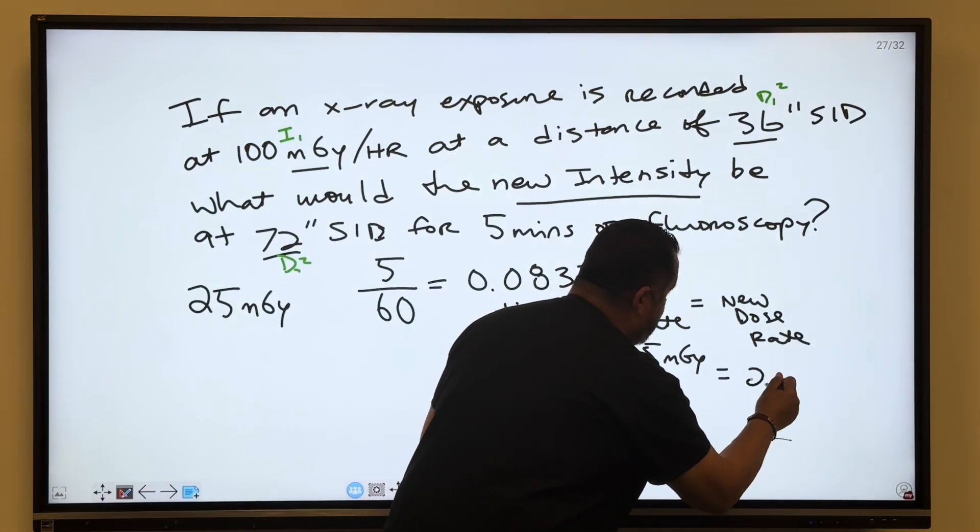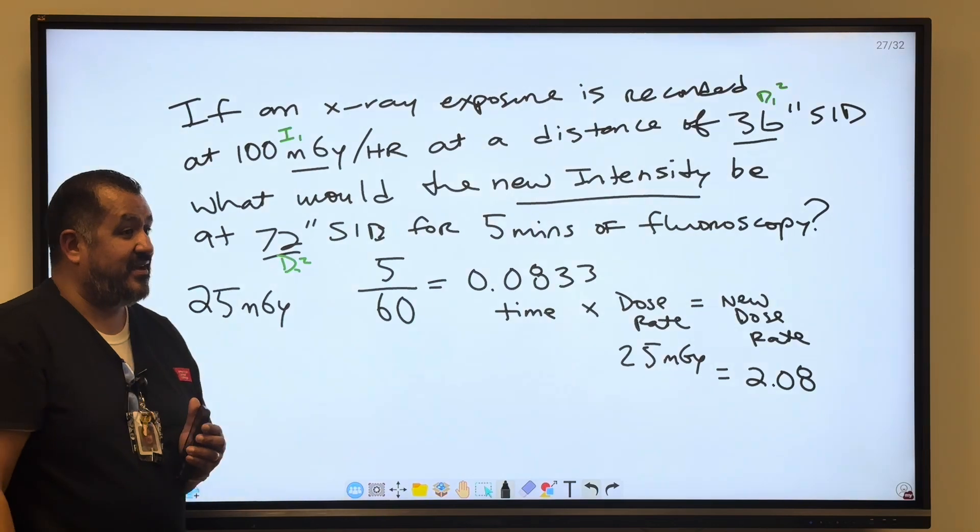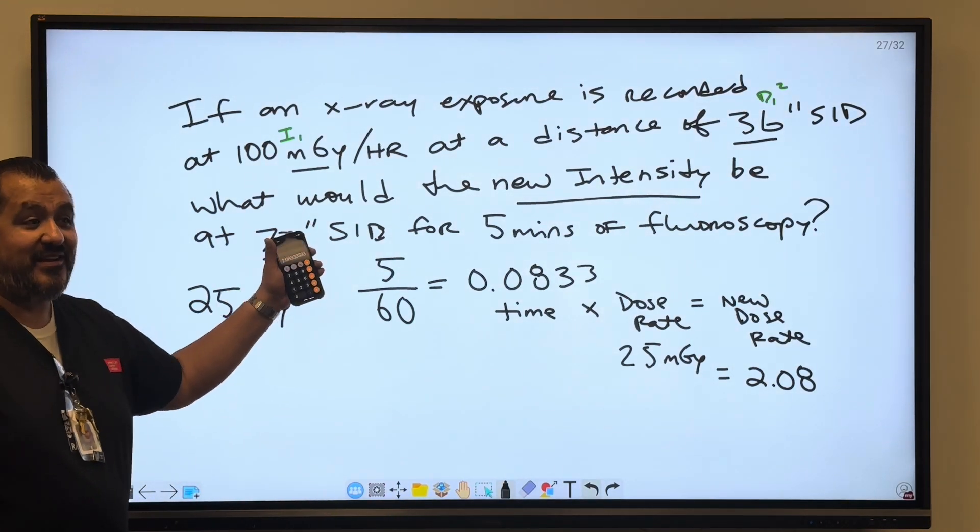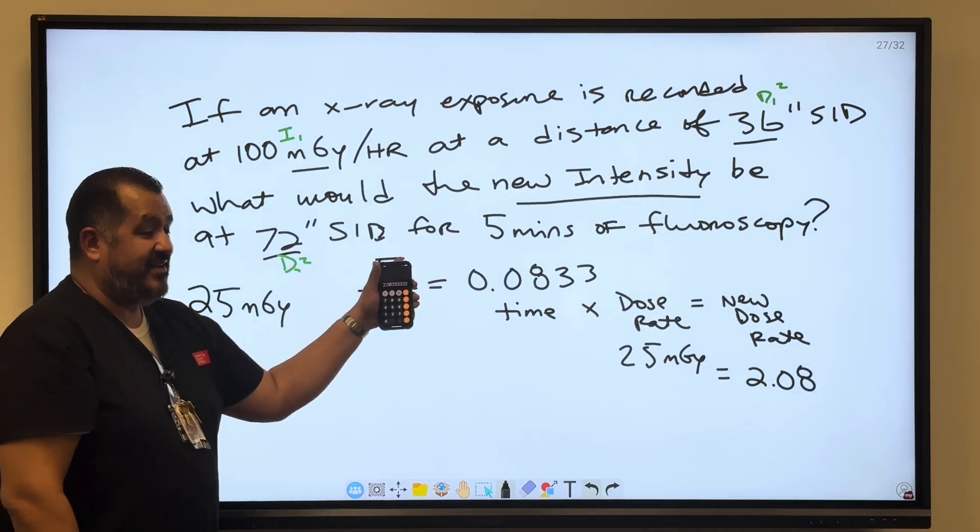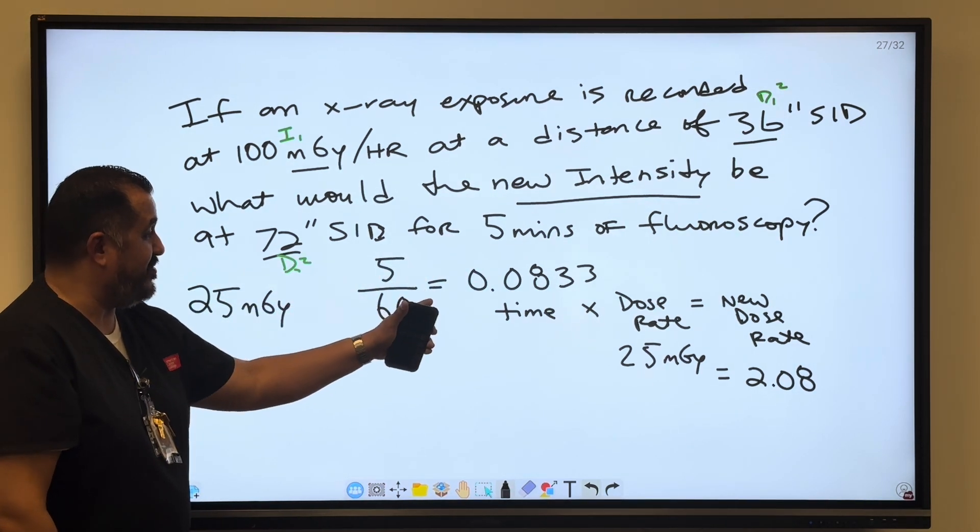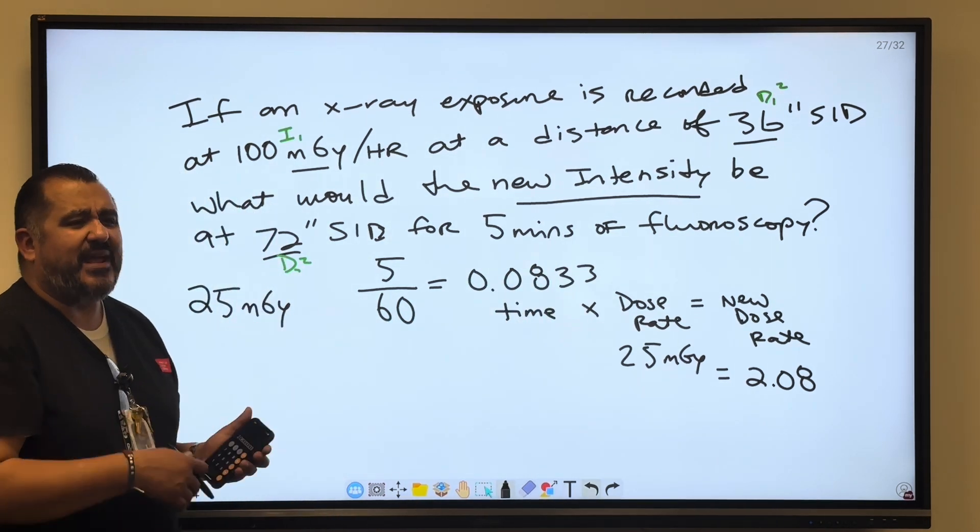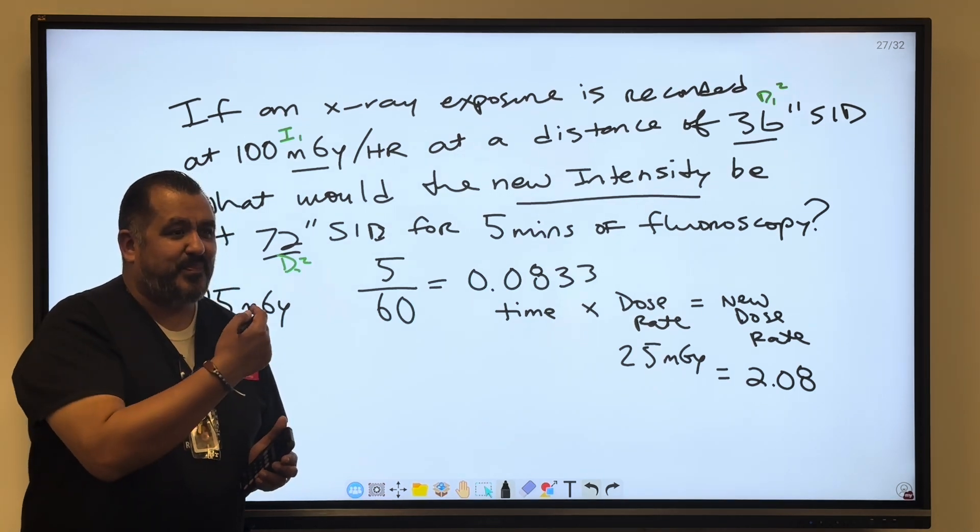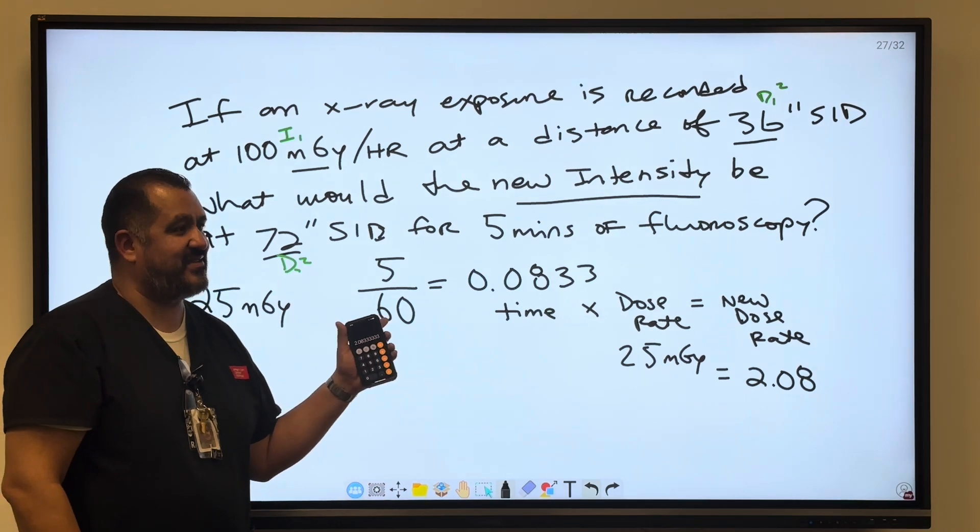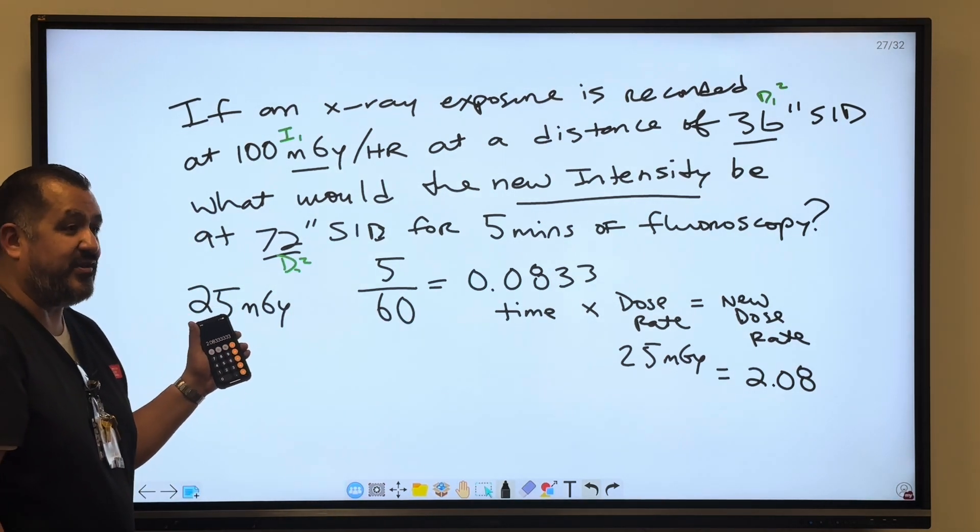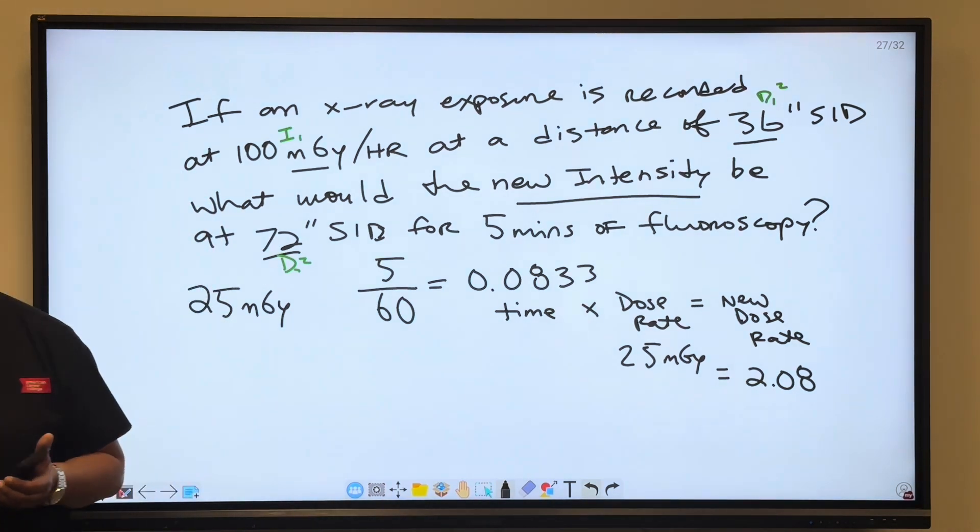So our new dose rate is 2.08 for 5 minutes of fluoro, because the other one was per hour. That's all you do, you take that time, divide it by 60, and that's going to give you whatever number, and you multiply it by your dose rate that you had originally calculated. So you have an extra step but it's easily obtainable. You take whatever time that you have, divide it by 60, multiply it by that dose rate you got, and you'll get your answer. And that's the inverse square law.